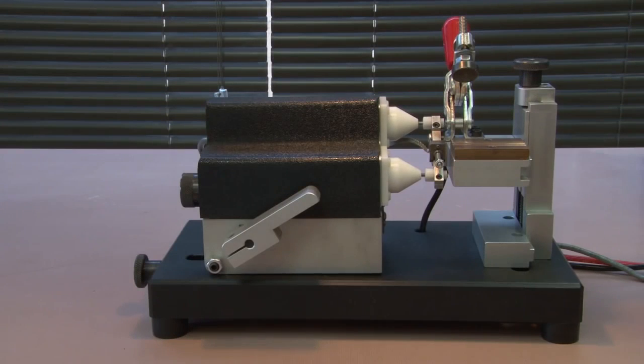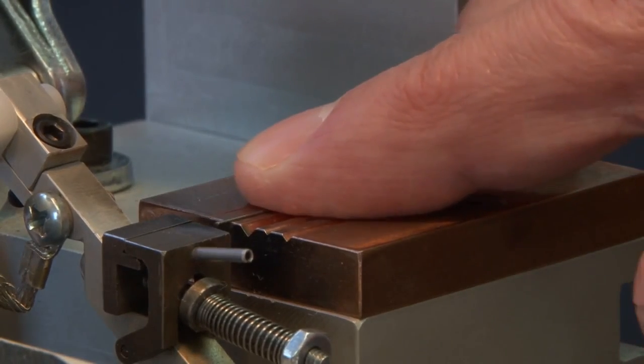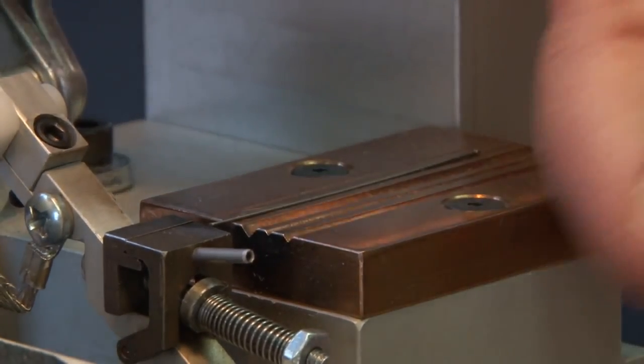We're going to weld together a 20 gauge steel pin which we're going to place in the stationary wire holder and clamp it down.